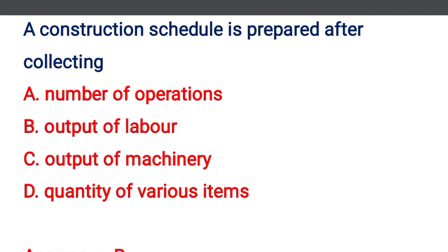Next question: a construction schedule is prepared after collecting — option A: number of operations, option B: output of labors, option C: output of machinery, option D: quantity of various items. The correct answer is option B: output of the labor.